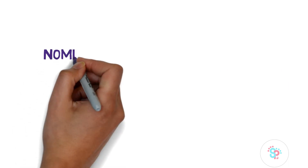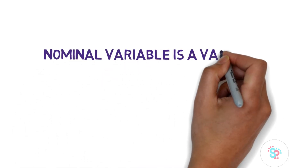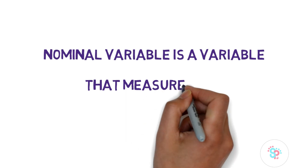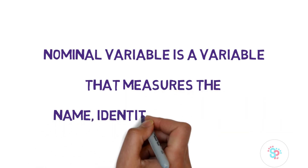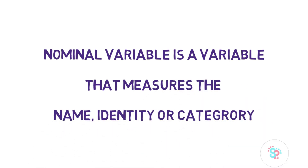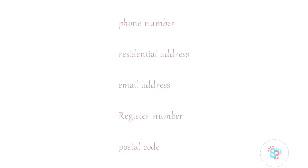Coming to the nominal variable: a nominal variable is a variable that measures the name, identity, or category. For name and identity, you can take these examples — name as a noun holds the name of a person, place, or thing. Then phone number, residential address, email address, register number, postal code, etc. These are examples for name and identity.